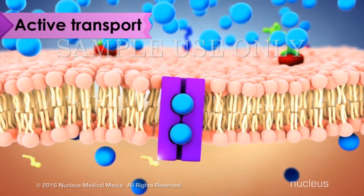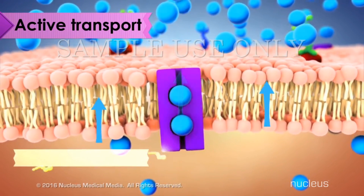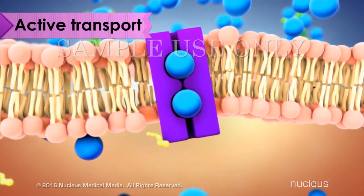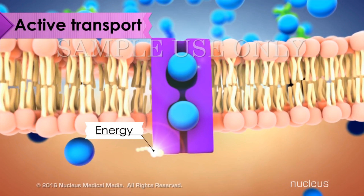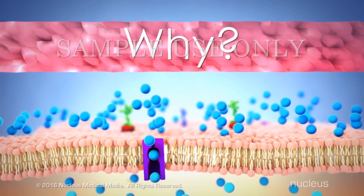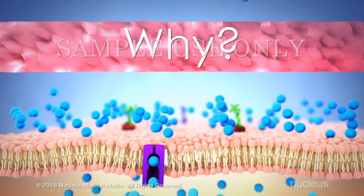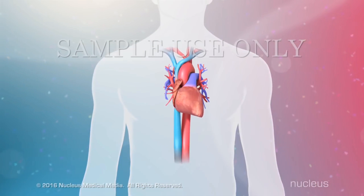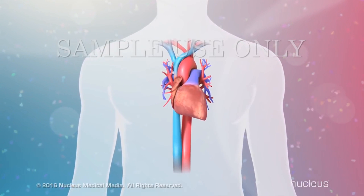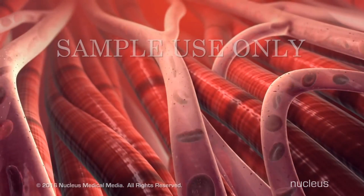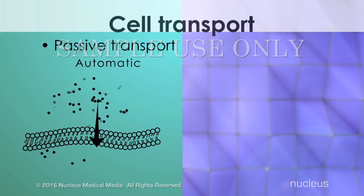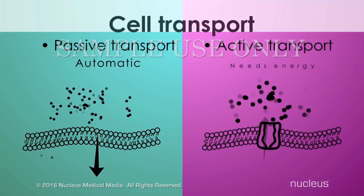The second category of cell transport is active transport. This is when particles move from an area of lower concentration to an area of higher concentration. When particles move against the concentration gradient, energy is required, often to allow protein pumps to assist in particle movement. Why would the cell need to move particles from a low to high concentration and expend energy to do it? An important example is seen in your heart muscle cells. In order for your heart to beat, there are certain molecules that have to move from an area of low concentration to an area of high concentration for those cardiac muscle cells to work. So, the main things to remember are passive transport happens automatically with no energy required, while active transport needs energy for it to occur.